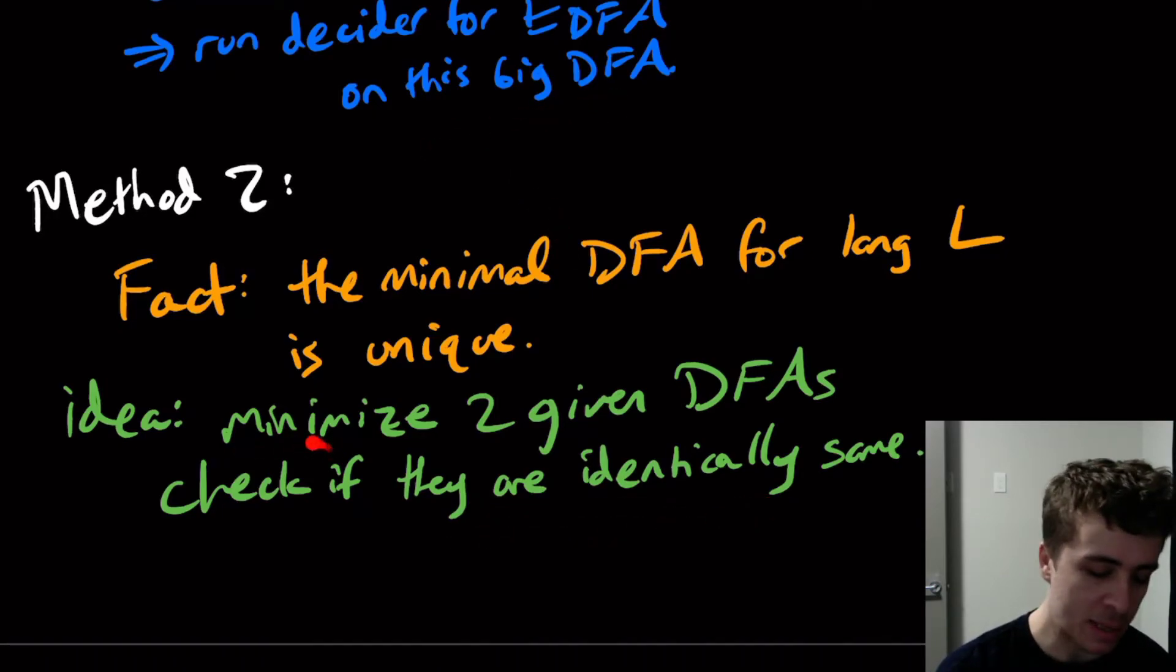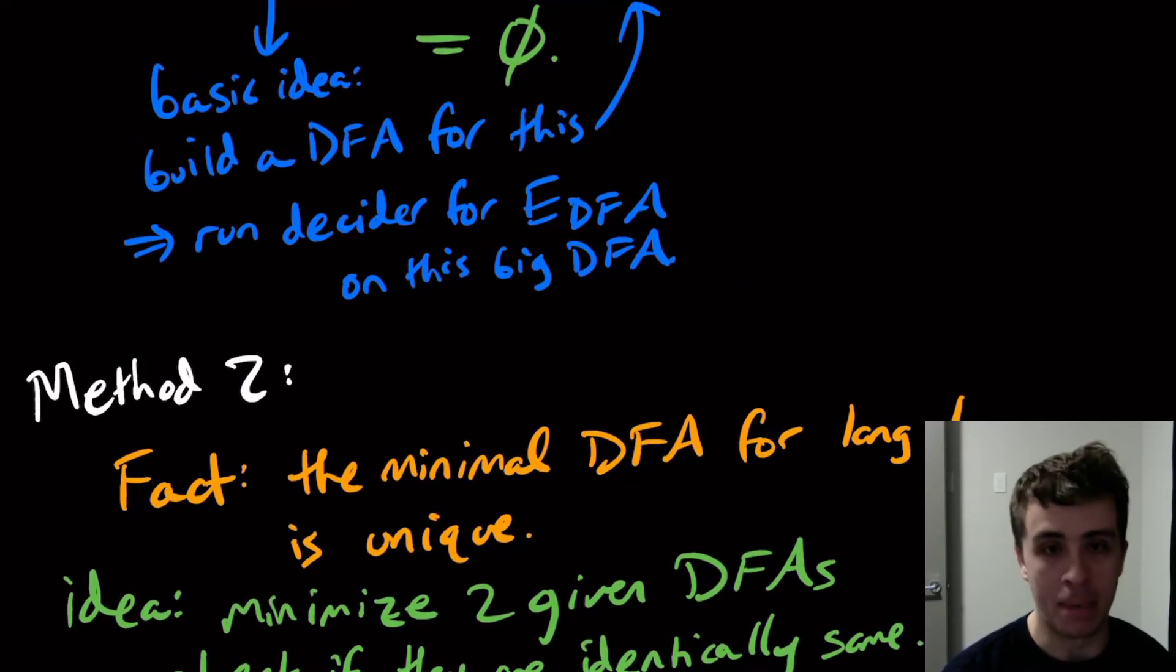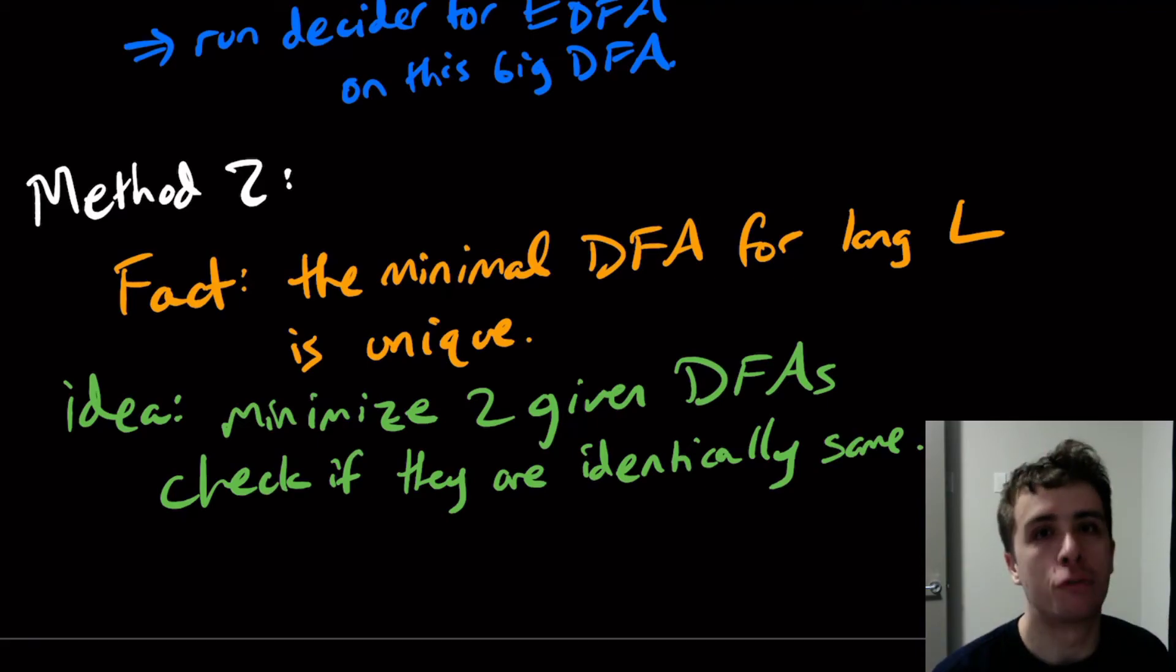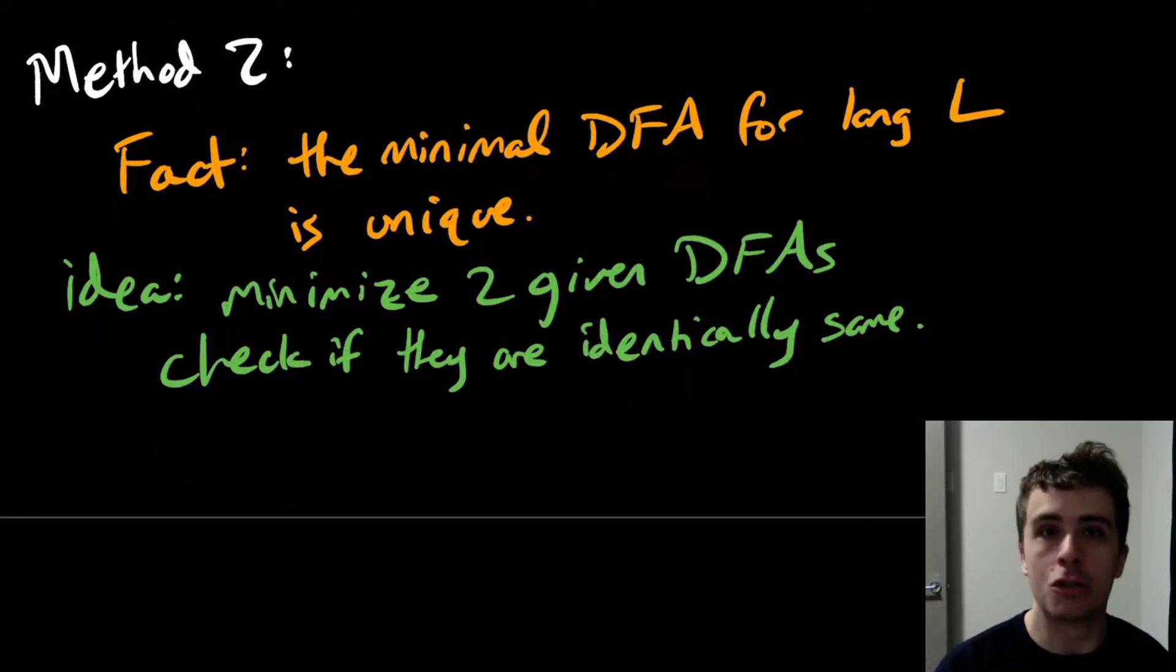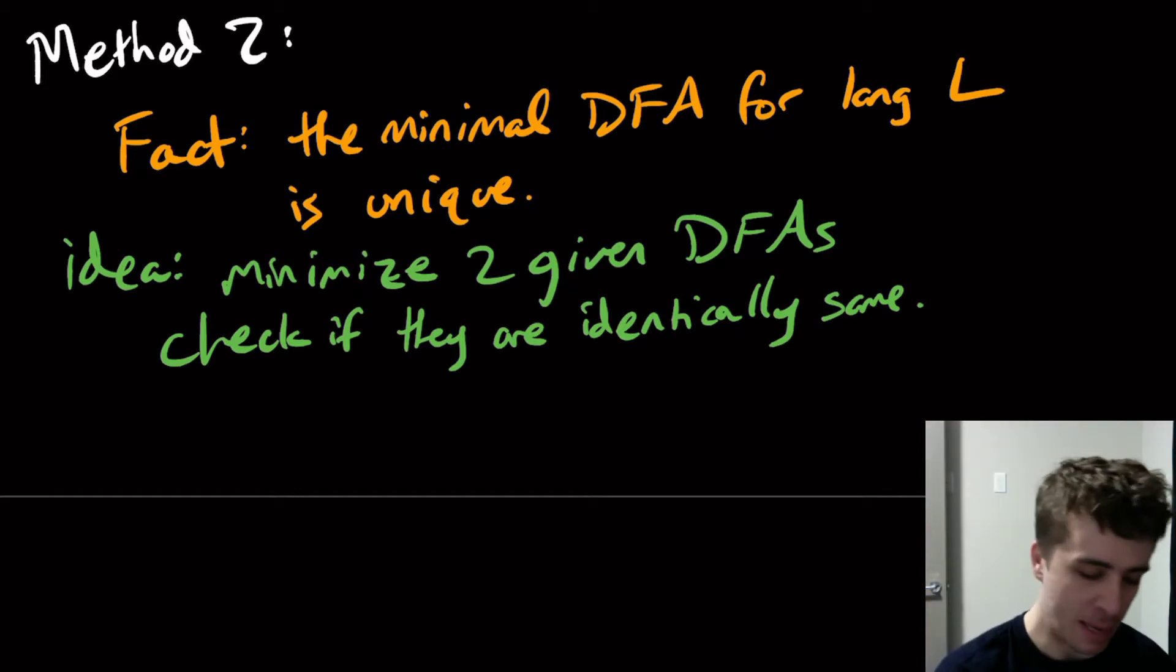But the part that kind of is crummy is the minimization, which takes actually quite a bit longer than up here in general. But that is one way that you can actually prove that they're the same because this is a fact specifically about DFAs. It is not true for NFAs, but it is true for DFAs. In fact, it's not even true for context-free grammars or anything like that. It's only true for DFAs. I'm not even sure if it's true for regular expressions.